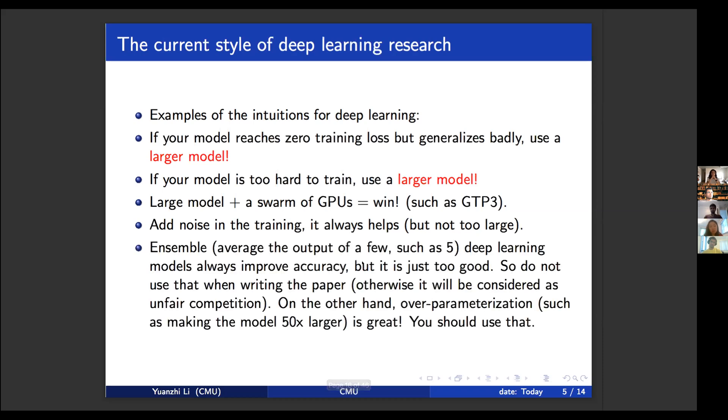And then you'll have other intuitions, such as ensemble, which is averaging the output of a few deep learning models always improves the accuracy, but this is too good. You shouldn't really write it in the paper. Otherwise, the reviewer will say that this is an unfair competition. On the other hand, you can use over-parameterization, which makes your model 50 times larger. That's considered fair computation compared to a model that is 50 times smaller. So you'll have all these kinds of intuitions.